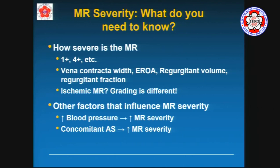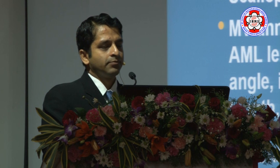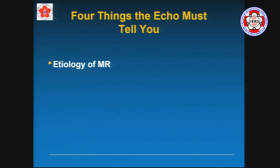Other things that affect MR severity as we grade them: higher blood pressure will increase your MR severity grading, and the opposite is also true. And obviously, if you have aortic stenosis or even to some degree aortic regurgitation, that will increase your MR severity as well. So briefly, how to grade MR severity — and then once you know that, you need to say what's causing the mitral regurgitation, what's the etiology.